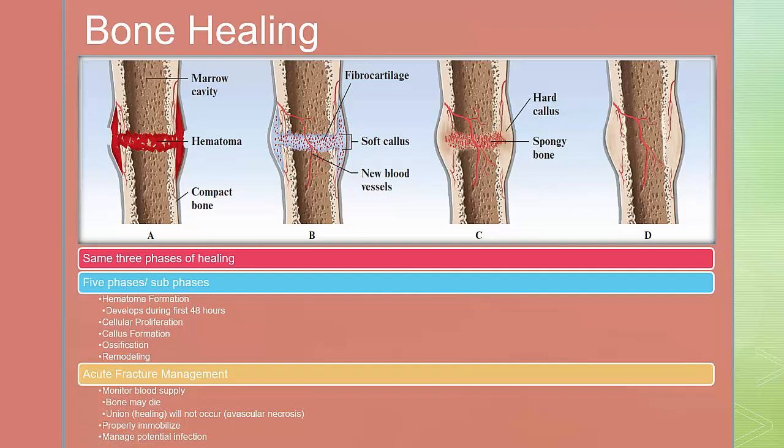Bone healing is a little bit different and occurs in three phases. The acute inflammation lasts for approximately four days; during this phase, a hematoma forms, vasodilation and edema occur. In the next phase — repair and regeneration — osteoclasts reabsorb the damaged bone tissue, osteoblasts build up new bone tissue, and a callus forms. During the maturation phase, some shape changes to the overall structure of bone occur and the integrity of the bone is forever changed. Acute fractures have five distinct stages: hematoma formation, cellular proliferation, callus formation, ossification, and remodeling.